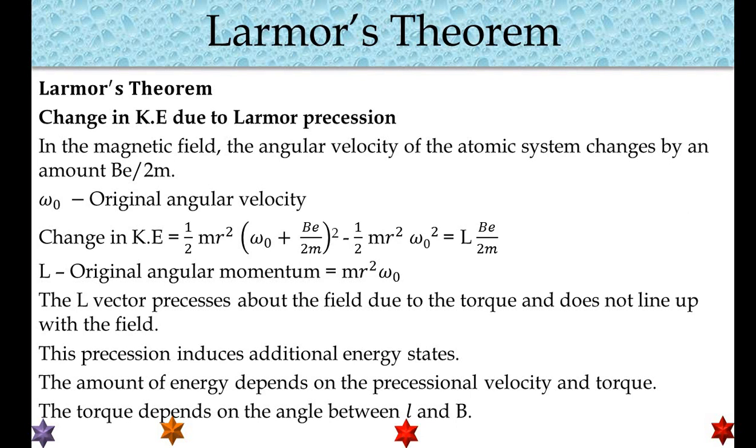L is the original angular momentum = mr²ω₀. The L vector precesses about the field due to the torque and does not line up with the field. This precession induces additional energy states. The amount of energy depends on the precessional velocity and torque. The torque depends on the angle between L and B.